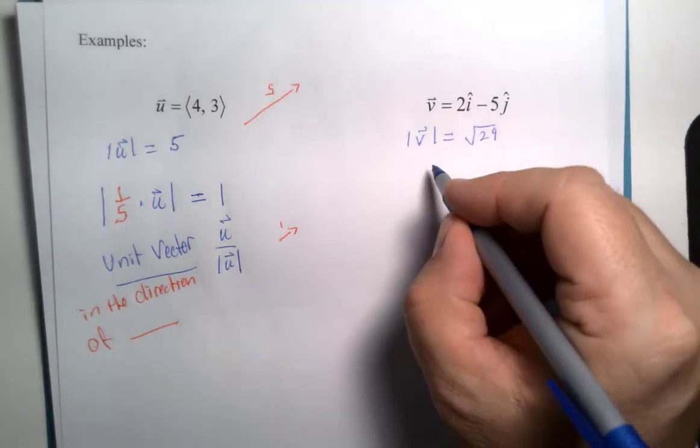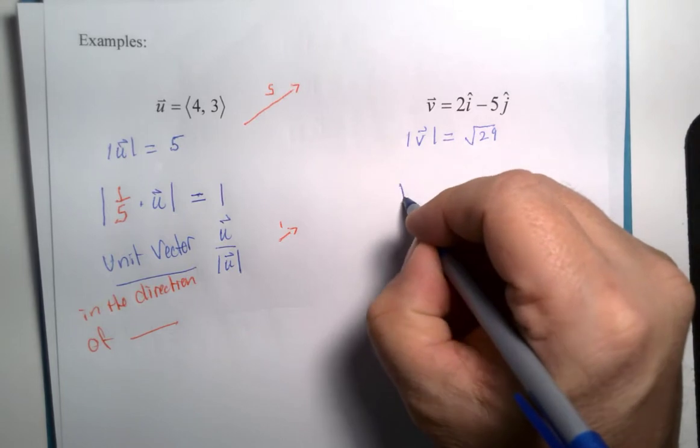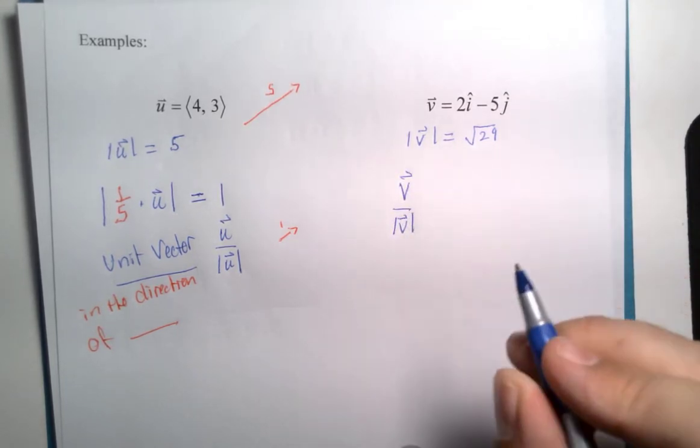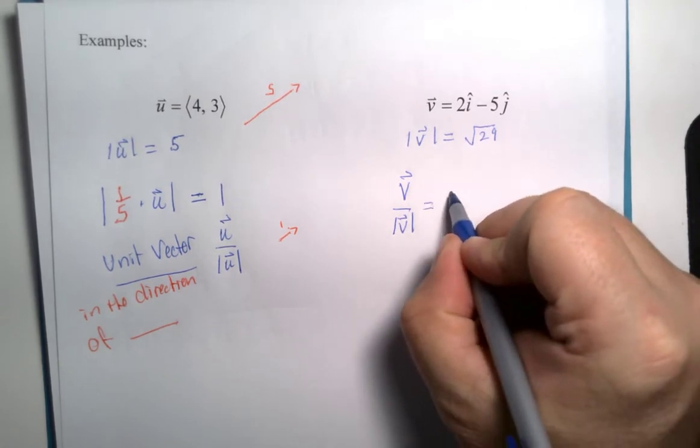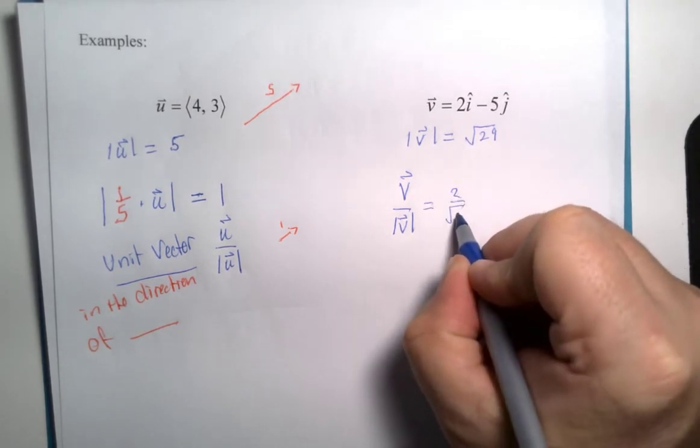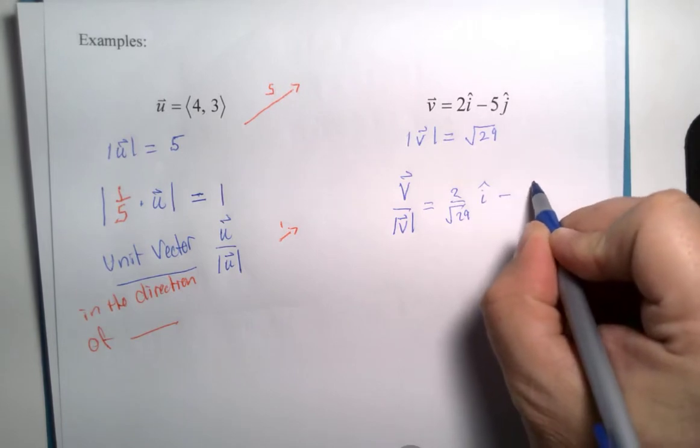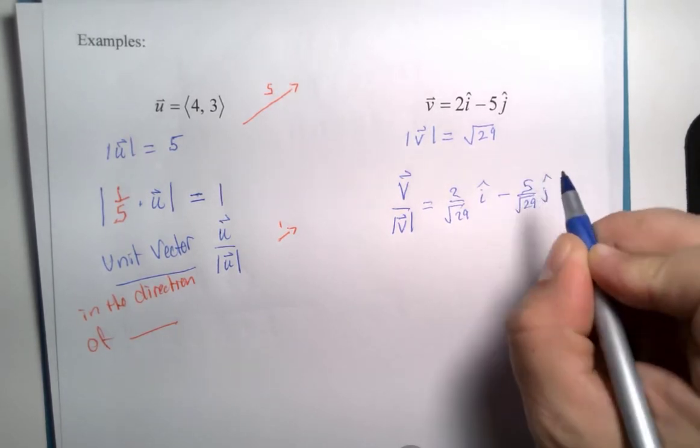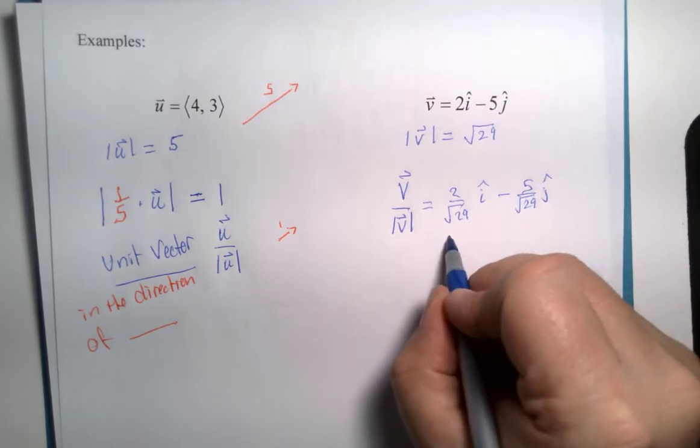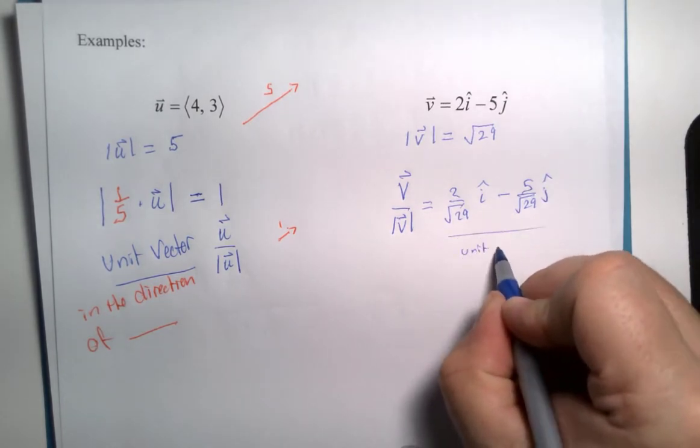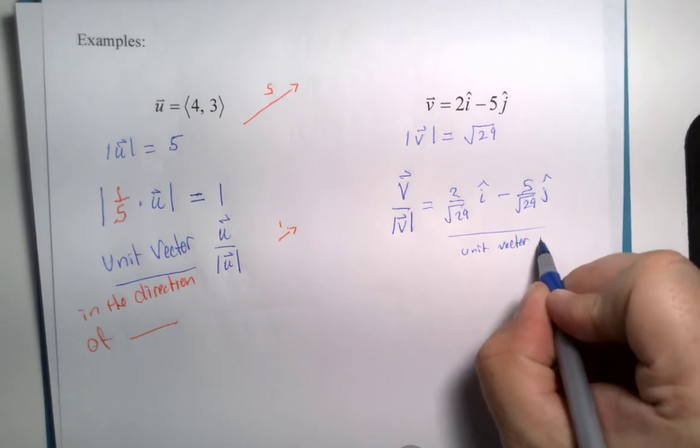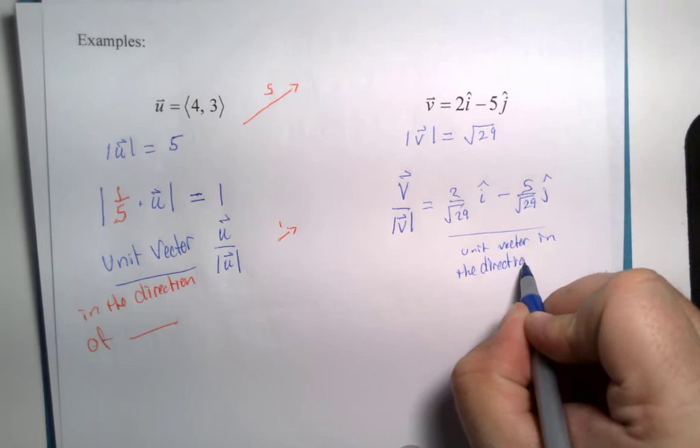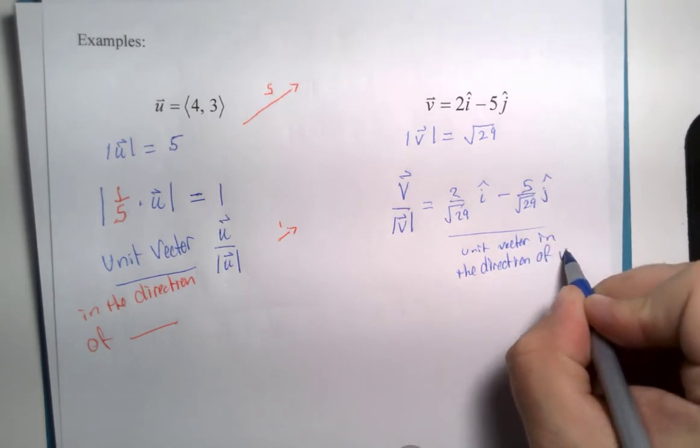The unit vector here, vector v divided by its magnitude or multiply by 1 over, that would be 2 over square root of 29 i minus 5 over square root of 29 j. So this would be a unit vector in the direction of vector v.